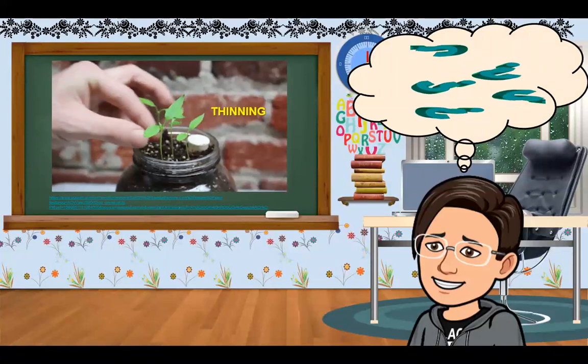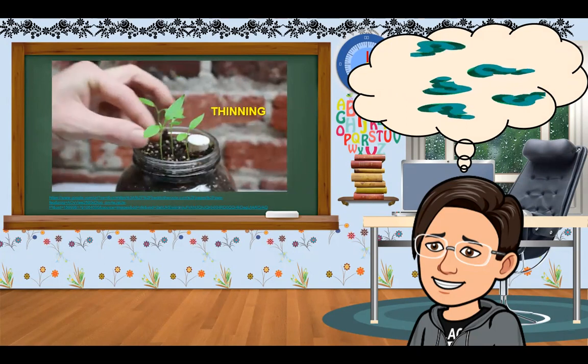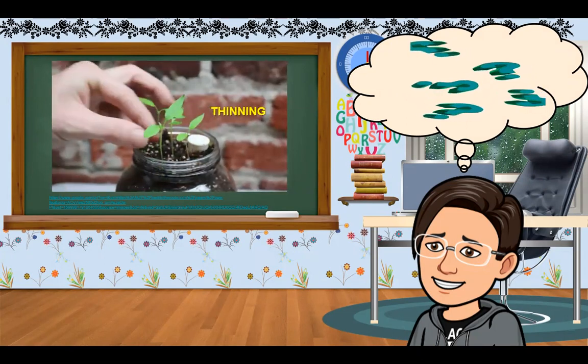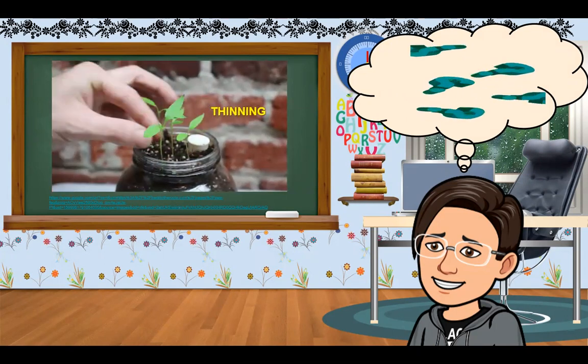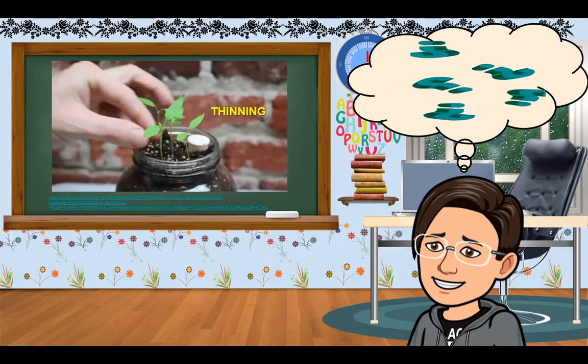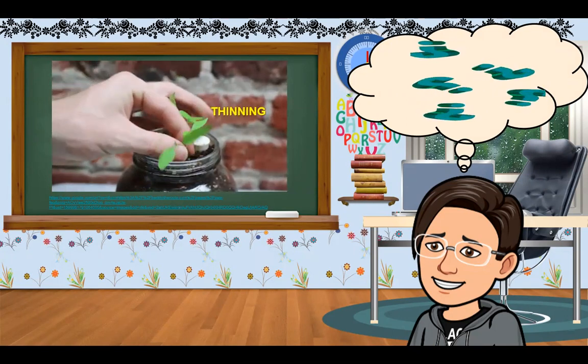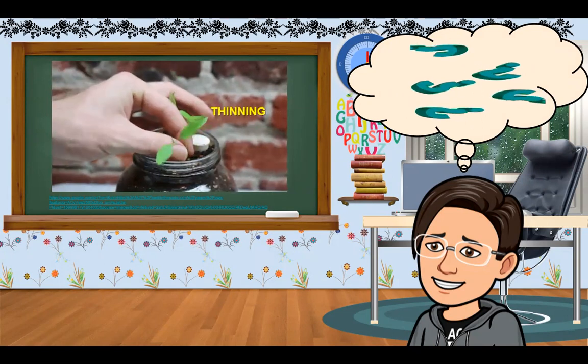When you plant seed for your hydroponic garden, you should overseed by 25% to 50%. Once your seeds have developed into seedlings, you can select the strongest plants and keep them. The weaker plants can be removed by pinching or thinning the plant off at the base. Pulling the plant out will disturb the roots of the plant that you are keeping.